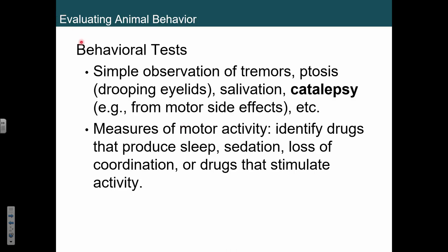So let's think about some behavioral tests we might do. Some things are going to be very simple. If we're testing an anti-epileptic, we should be able to give that to an animal and they should have fewer seizures — that's pretty straightforward and easy to measure. If we're looking at other effects, we can measure sleep, sedation, loss of coordination, motor activity. These are straightforward, easy behavioral tests, and the same things will typically happen in people.